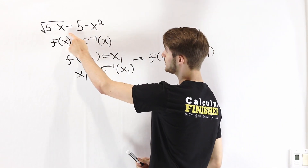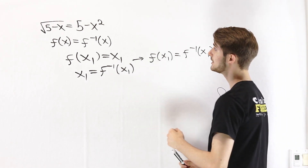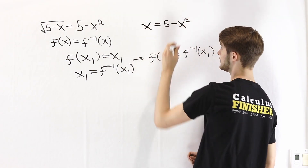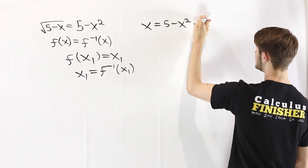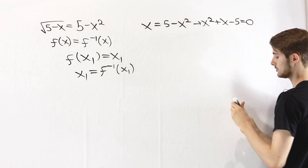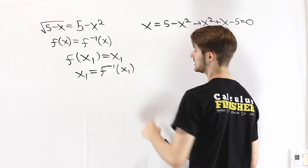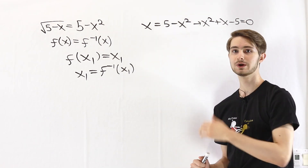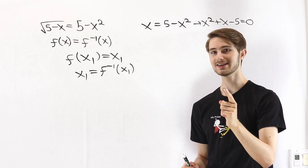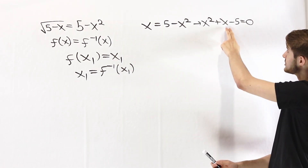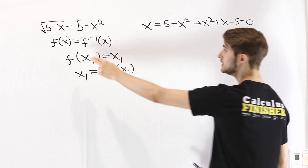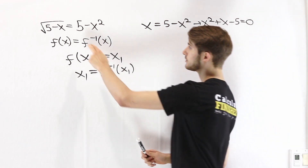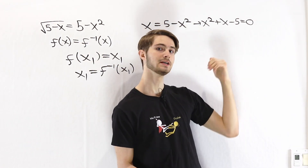For this specific equation, we'll pick one of the sides — it doesn't matter which — and go with 5 minus x squared. We need to find some number such that x equals 5 minus x squared. Moving everything to one side gives x squared plus x minus 5 equals 0. But before solving this, let's take a step back: this equation gives us a solution to the original, but not necessarily all solutions. There may be other solutions we won't get from this alone.